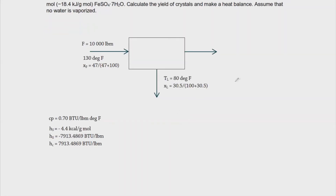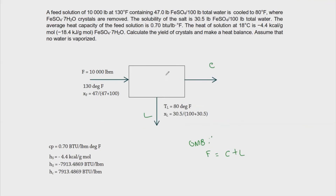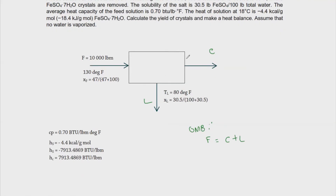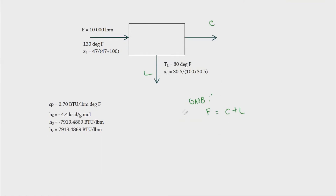To start the computation, the overall material balance for a Swenson Walker crystallizer is F = C + L, where C is the crystals and L is the liquor. Since there is no evaporation — this is a cooling crystallizer — we have C + L = 10,000 pound mass. Now we proceed with the component balance.